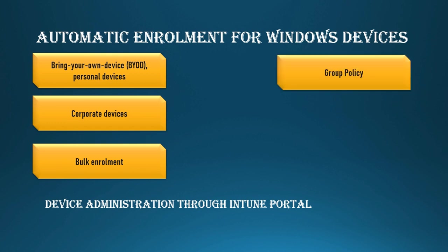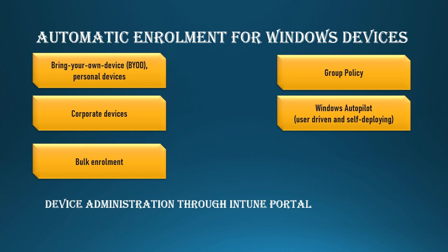Another method is Group Policy, which is Active Directory-based. Using Active Directory templates with Intune, you can do on-premise Group Policy or you can do Intune Group Policy. Then there is Windows Autopilot — that is a great concept. In Windows Autopilot, you can do Intune enrollment.